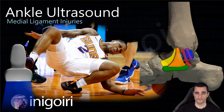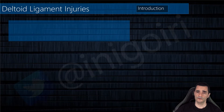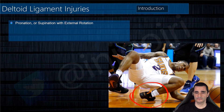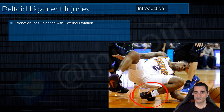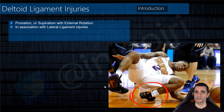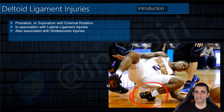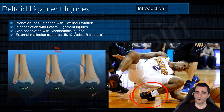A brief introduction: the mechanism of injury is usually supination with external rotation, as you can see in the image. In this mechanism, the superficial layer is usually affected. With pronation, the deep layer will be affected. These are very rare as isolated injuries and they come with other injuries, usually lateral ligament injuries, syndesmosis injuries, or external malleolus fractures.